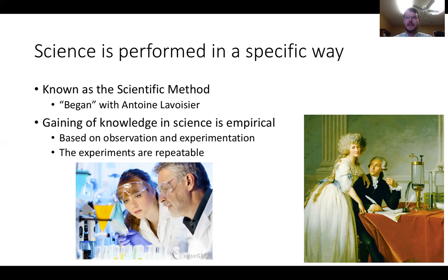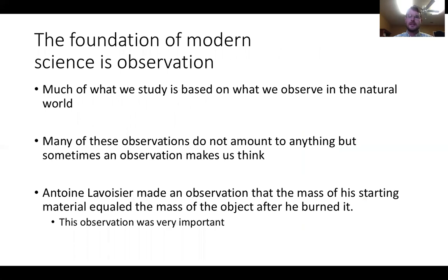Knowledge in science is empirical — it's what we see, what we do, what we experiment. These experiments have to be repeatable. What does it mean for an experiment to be repeatable? What happens if another lab can't replicate your results? These are important questions to think about. The foundation of modern science is observation — much of what we study is based on what we observe in the natural world.